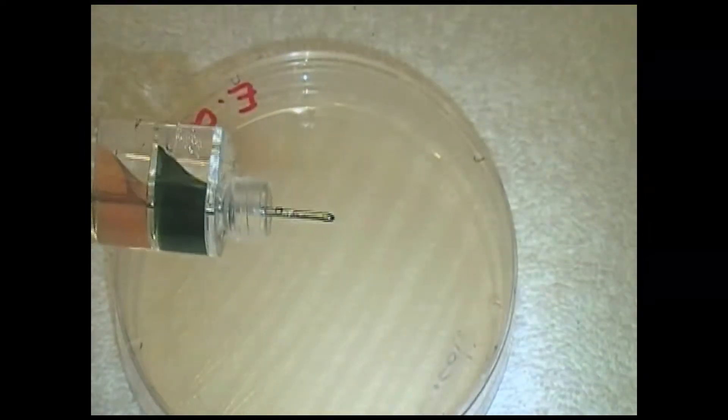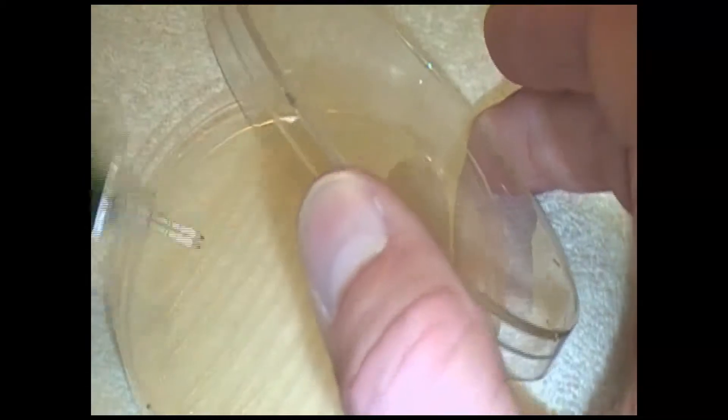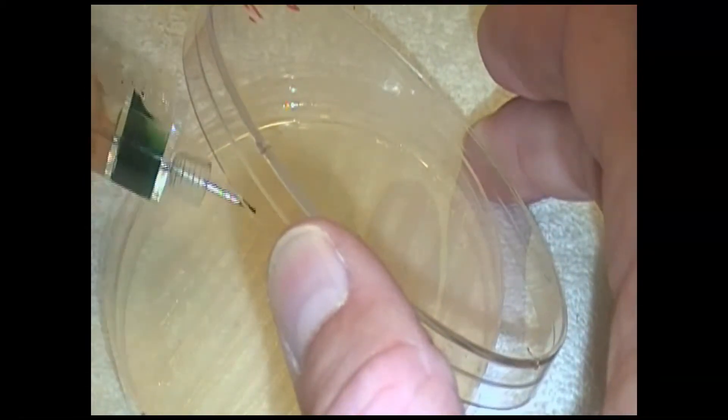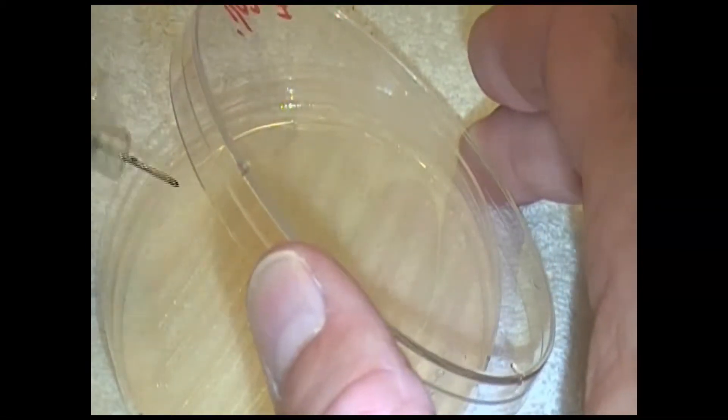That's going to expose our needle. We take our petri dish. We are going to open it up, and we don't want to open it up too much. Then we are going to come in here, and we are going to rub the needle on some colony to get the colony on it.